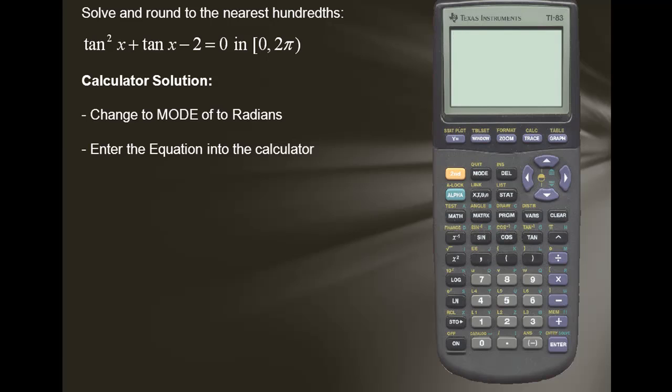Next we'll enter the equation into the calculator, so we'll use the y equals. We'll put in the function tangent x, close off the argument for x, and then square, plus the tangent of x. We'll close off the argument for tangent minus 2.